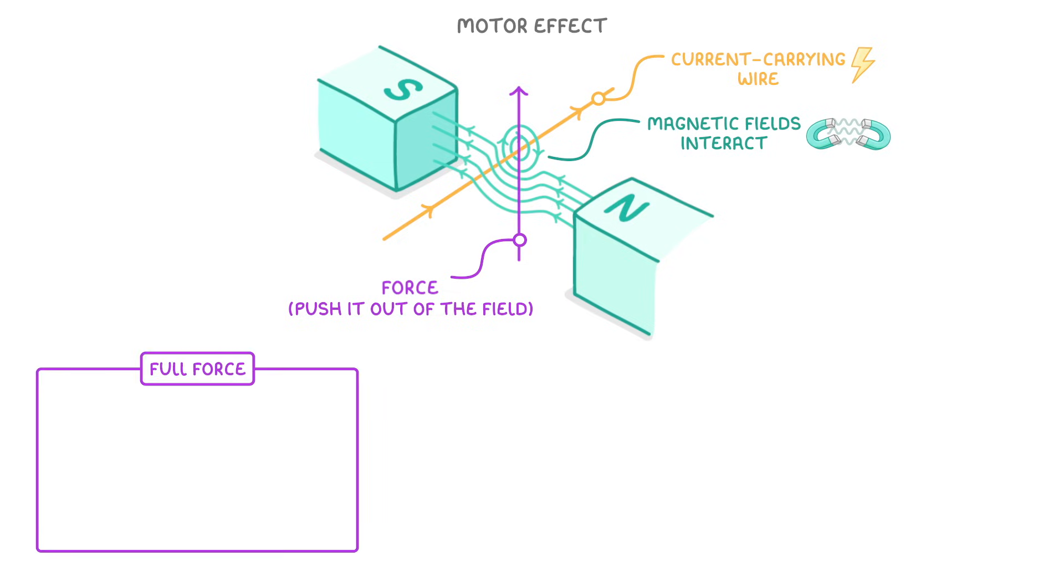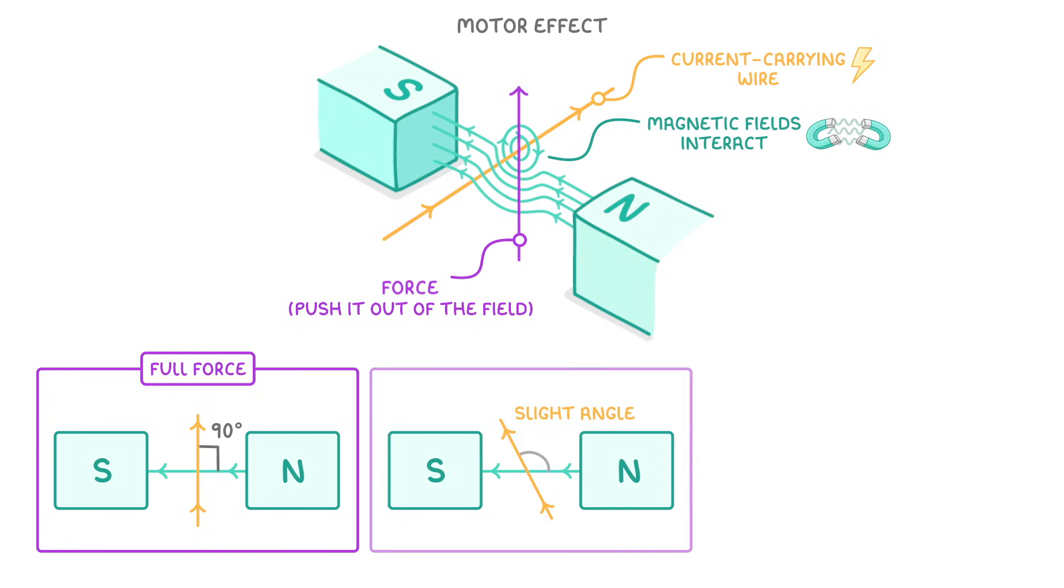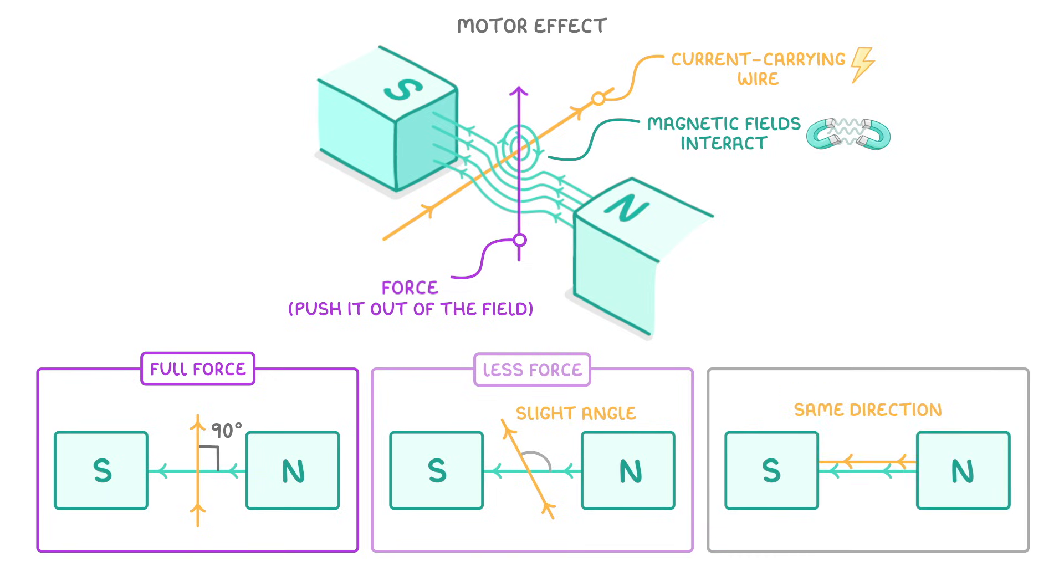However, to experience the full force, the wire has to be at exactly 90 degrees to the magnetic field. Whereas if the wire is at a slight angle, it will feel slightly less force. And if the wire was running in the same direction as the field, then it would feel no force at all.